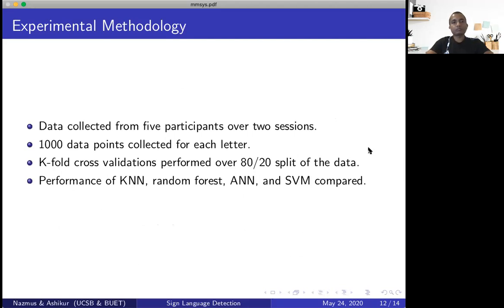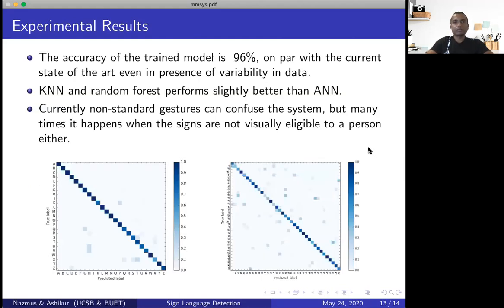The experimental methodology is pretty much what we discussed in the data collection phase. And we've seen that our system is able to achieve a pretty high accuracy of 96% which is on the same level as the current state of the art. We observed that KNN and random forest perform slightly better than ANN. However, as we wanted to deploy this system in resource-constrained environment, we finally went with artificial neural network, a very simple one with a single hidden layer with seven nodes in that hidden layer.